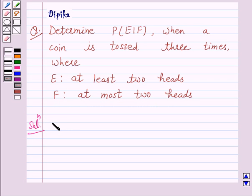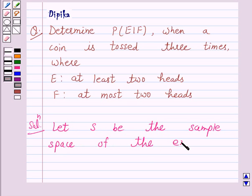Let S be the sample space of the experiment tossing a coin three times.